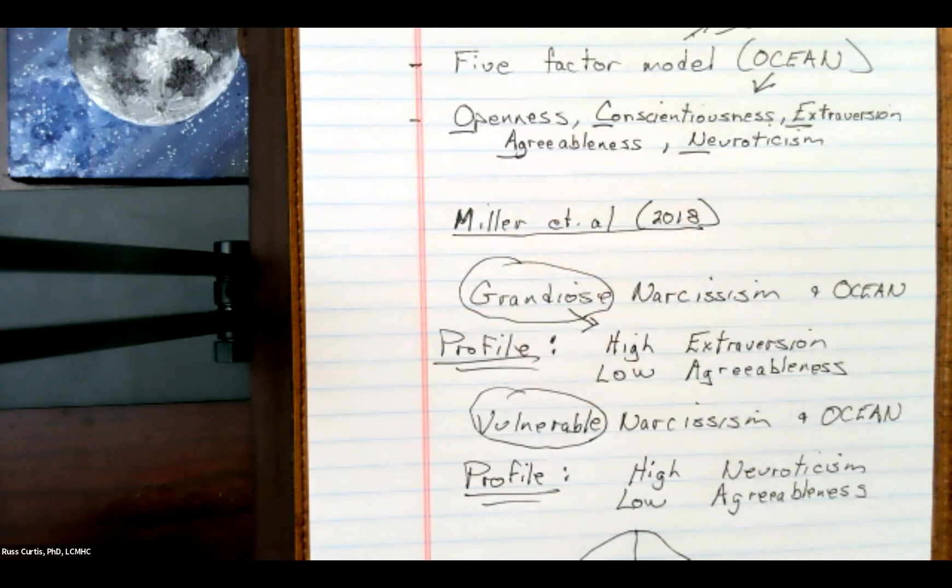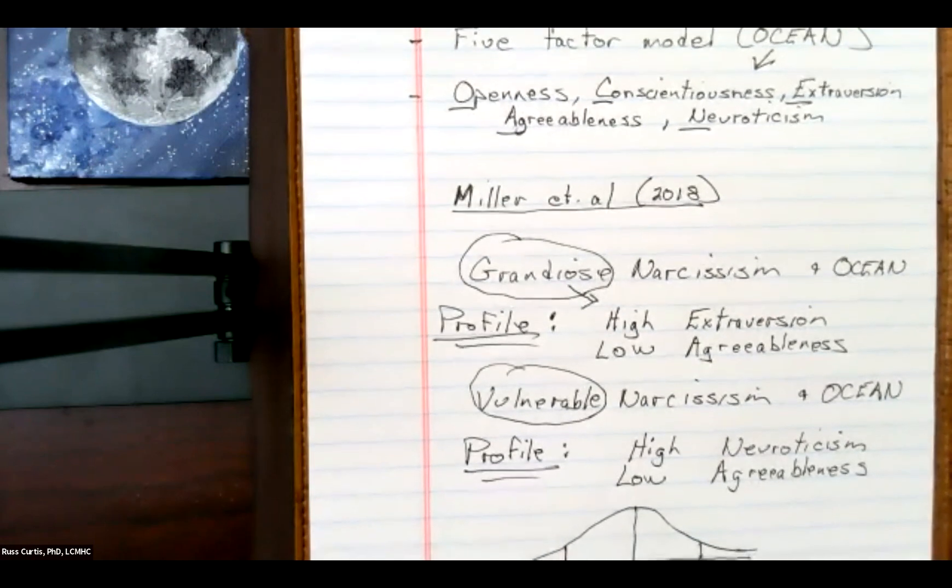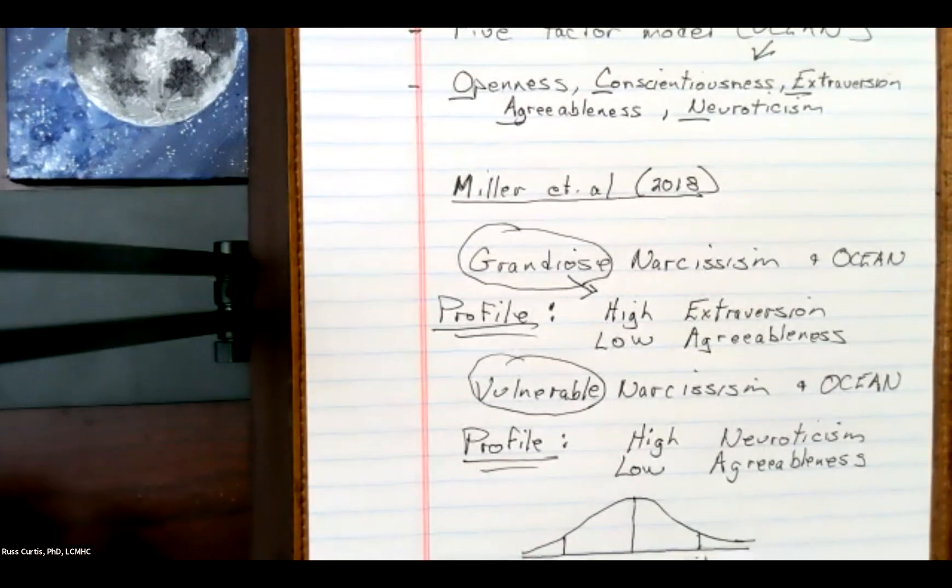Clearly, we never use one test to label somebody. That's not what tests are for. They are to provide information, if we're using it with a client or a victim, to help process and let people make their own decisions. So we never want to use these to label. I've taught tests and measurement for a long time, and we don't want to do that. People are complex. Issues are complex.